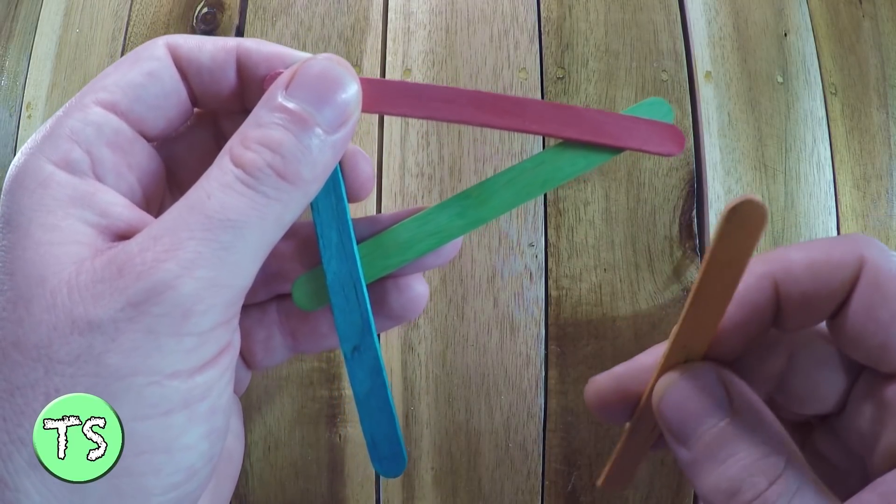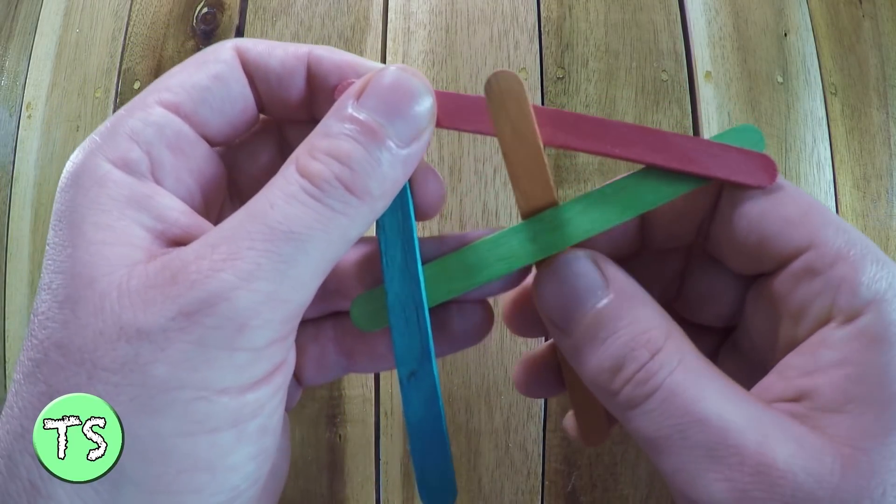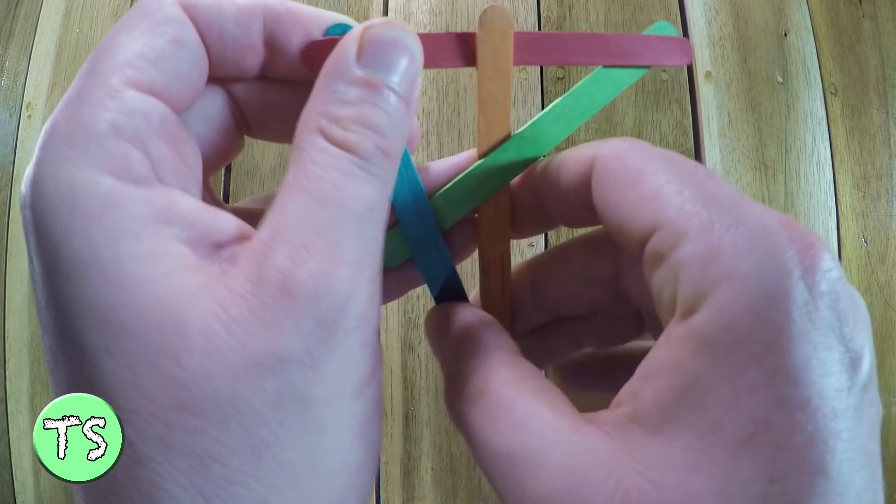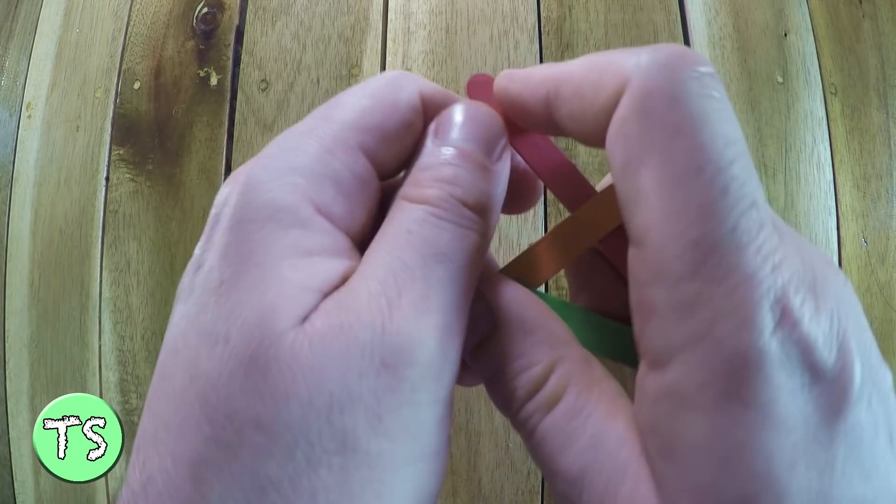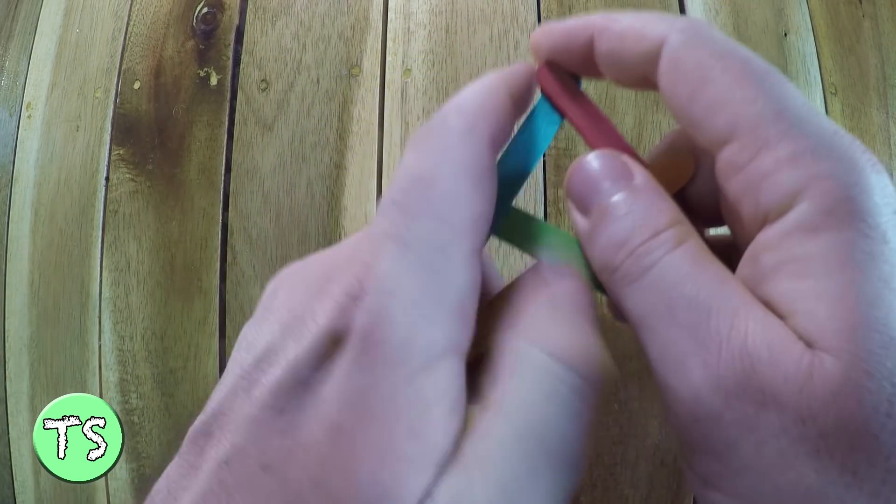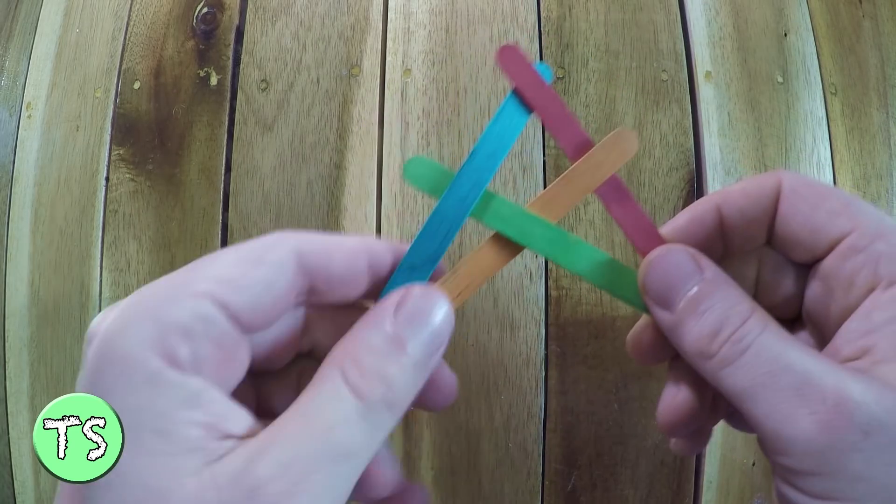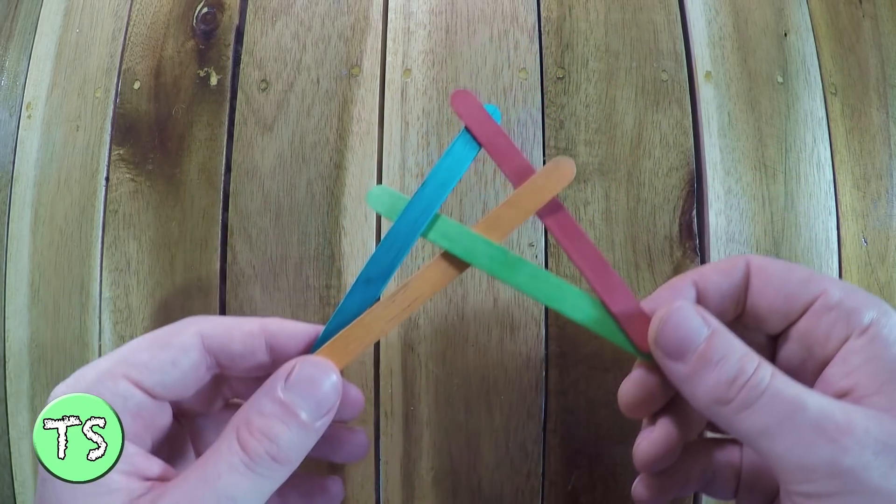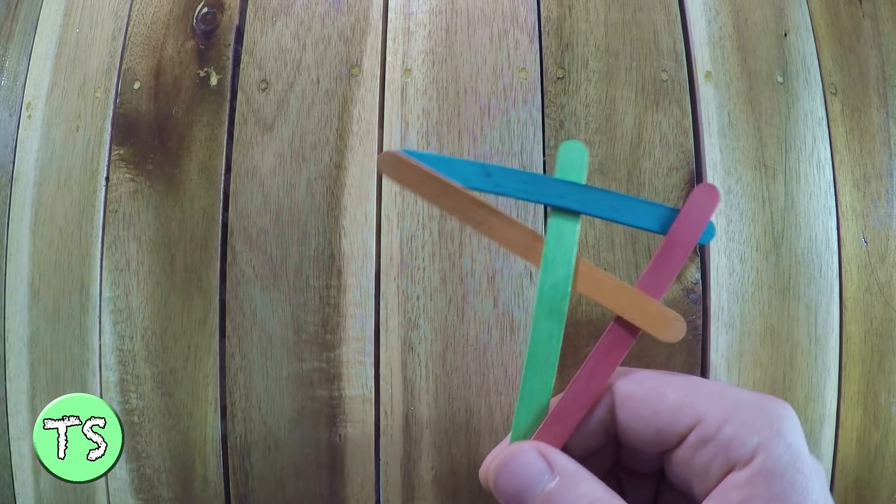So the orange stick goes over the red stick, under the green stick and over the blue stick. So all the popsicle sticks hold in place. We now have a popsicle stick boomerang.